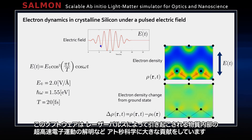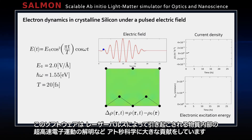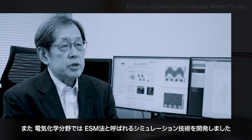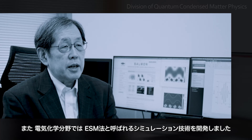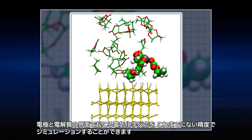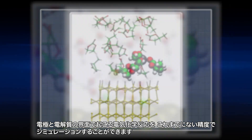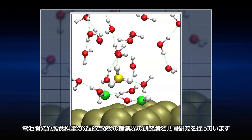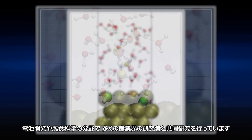SALMON has made great contributions in attosecond science to uncover ultra-fast electronic motion inside materials induced by laser pulses. We also developed a simulation technique called the ESM method in electrochemistry. We can simulate electrochemical reactions at the interface between the electrodes and the electrolyte with unprecedented accuracy, and we are conducting joint research with many industrial researchers in battery development and corrosion science.